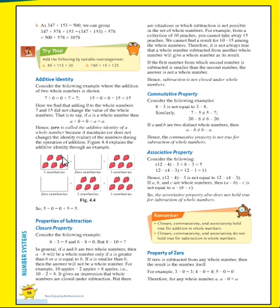Because if we add zero to any number, the result does not change, so five remains as it is. Then zero strawberries plus five strawberries also equals five. So five plus zero equals zero plus five equals five — this is the additive identity. Next, we'll learn about the properties of subtraction.